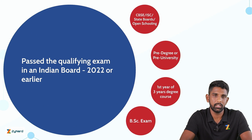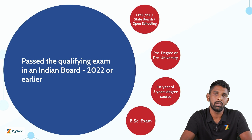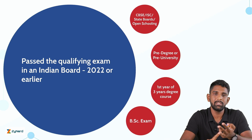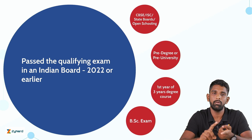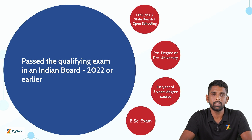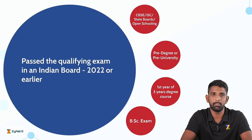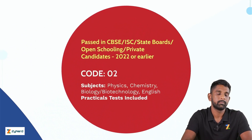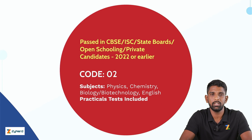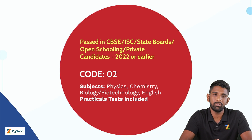The different conditions are mentioned here. The first condition is if the candidate has completed their qualifying examination from CBSE, ISC, open school, or from a state board. The second option is if the candidate has finished their pre-degree or pre-university. The third option is if the candidate has finished their first year of the three-year degree course. The fourth option is if the candidate has completed their BSc examination. If the candidate has passed their examination in CBSE, ISC, open schooling, or from a state board, then they have to select Code 2.